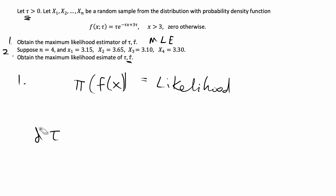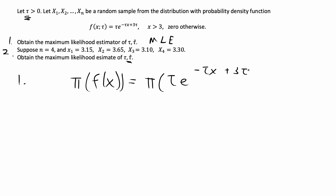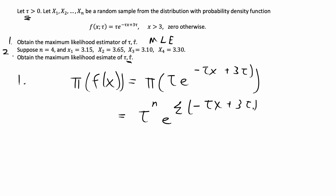We're given the PDF here, so I'm going to first take the product of the PDF. That's going to be the product of tau times e to the negative tau x plus 3 tau. When I take the product, I just say that's tau to the n. Then this is going to be e to the sum of all those terms — the sum of negative tau x plus 3 tau.